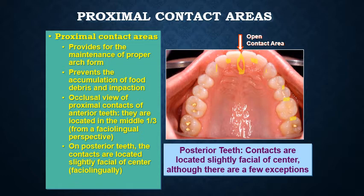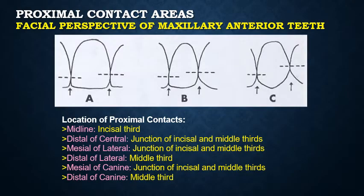Looking at the maxillary anterior teeth from the facial aspect: the two maxillary central incisors contact in the incisal one-third. The central incisor contacts the lateral incisor at the junction of the incisal and middle one-third. The distal of the lateral incisor contacts the canine in the middle one-third.